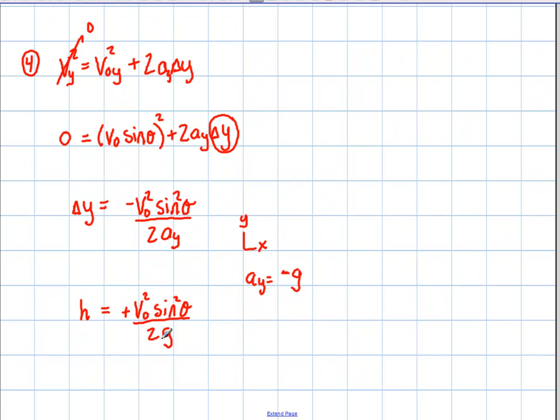But typically when we're working with numbers, not symbols, but numbers, I always like to just say that acceleration Y is negative 9.8 meters per second squared. And we just stick with that when we're working with the numbers. But if you're dealing with symbols, sometimes this is more useful. It really depends on what you're trying to accomplish in the problem.